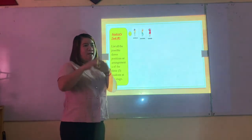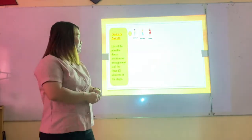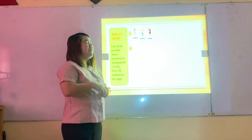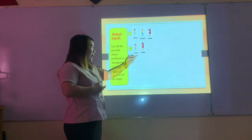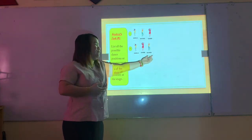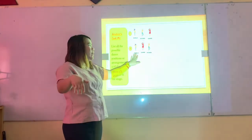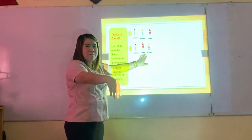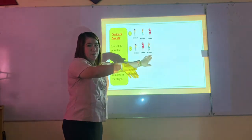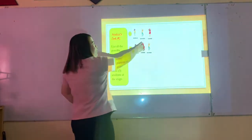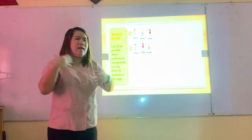Another arrangement: Daniela occupies the first position, Charlie the second, and Victoria the third. As you can see, Victoria and Charlie just changed their positions.